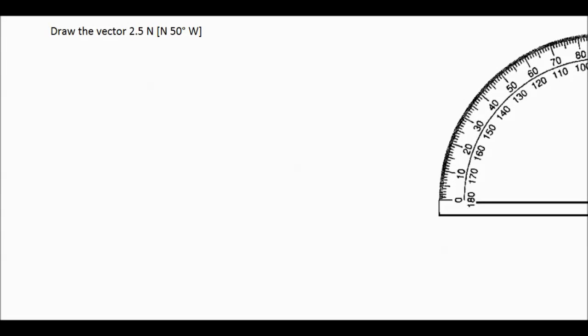When drawing vectors, remember that it is an arrow that represents both magnitude and direction. So both have to be very precise.